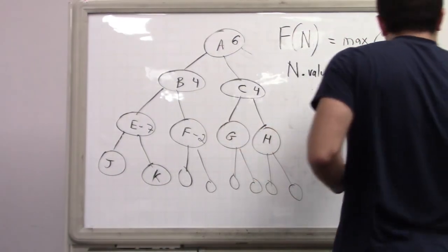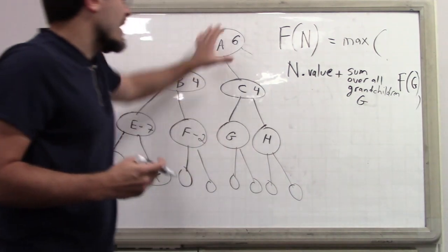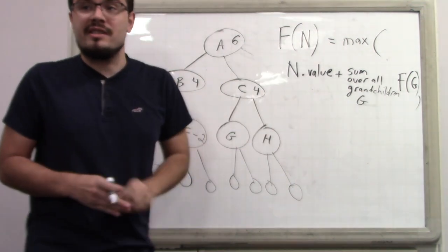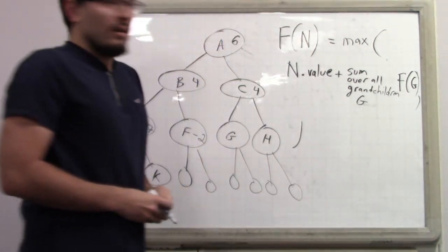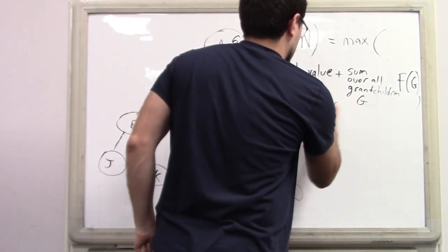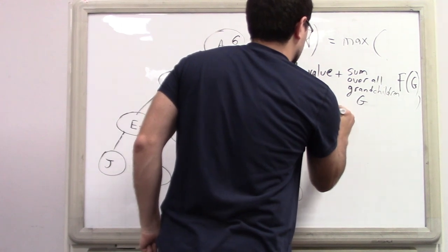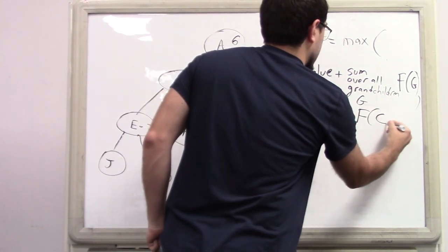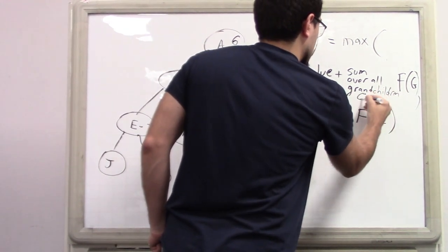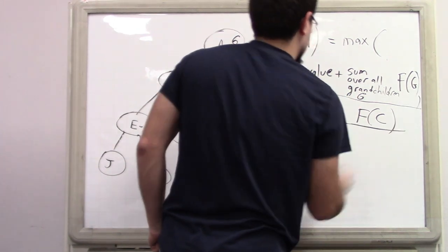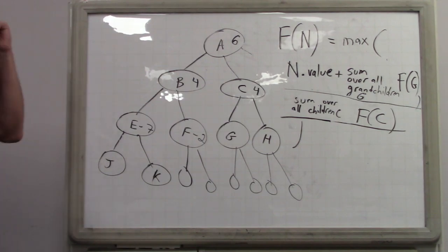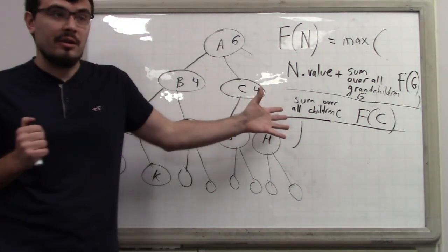And what's the other choice? You skip. If you skip, the answer is: sum over all children C of f(C). So those are the two items in the max — these are pretty straightforward if you think about it.